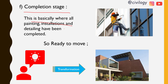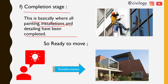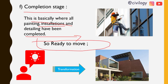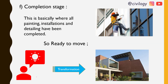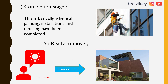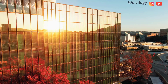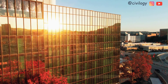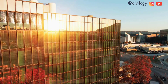The final stage is the completion stage, where all paintings, installations, and detailing have to be completed. Now we are ready to move into the house. From the idea of constructing a house to the end of construction, we follow these steps.